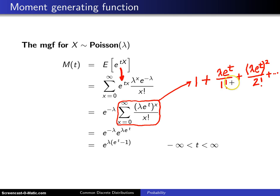Just as before, you recognize this series as e raised to the lambda e to the t power. Since you have like base here, you combine the exponents and get e to the lambda multiplied by the quantity e to the t minus one. This definition is good for all t values between negative infinity and infinity.